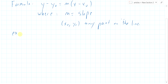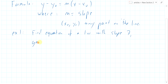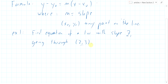Example one: find the equation of a line with slope seven going through the point two comma three. What we know is the slope and a point on the line. We don't know the y-intercept here, but we have our formula. So our slope m equals seven, and our point x0 comma y0 is two comma three, meaning x0 is two and y0 is three.